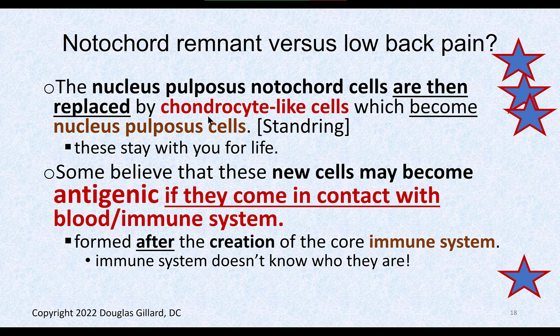The new cell type is a chondrocyte-like cell — some authors call it a fibroblast-like cell; Gray's Anatomy calls it chondrocyte-like. It takes over making proteoglycans but is not as good at it as the original notochordal cells. An interesting point: some authors believe that since these new cells appeared at age 10, before a functional immune system existed, the immune system may not recognize them. There are no blood vessels or lymphatics in the middle of the disc — it's like a wasteland.